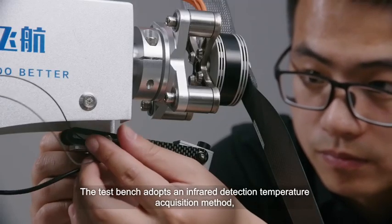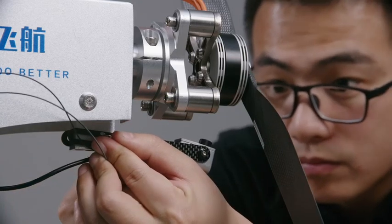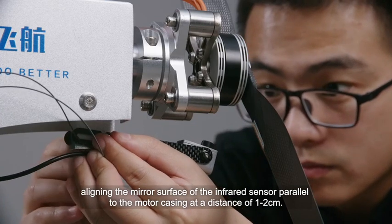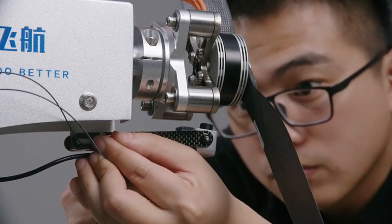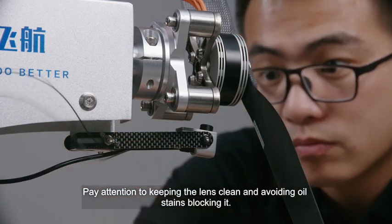The test bench adopts an infrared detection temperature acquisition method. Aligning the mirror surface of the infrared sensor parallel to the motor casing at a distance of one to two centimeters. Pay attention to keeping the lens clean and avoiding oil stains blocking it.